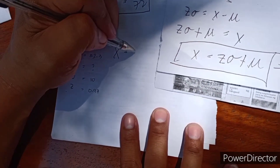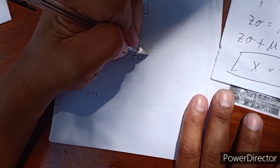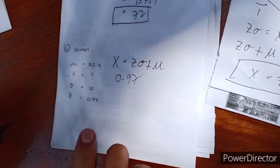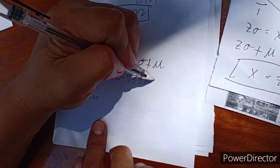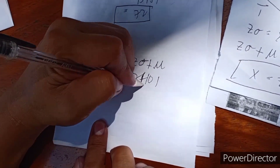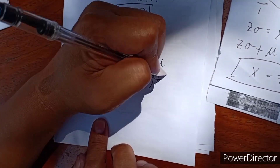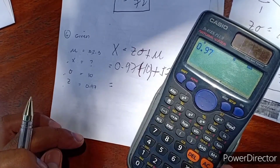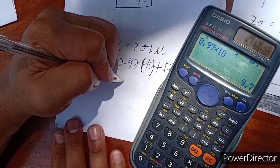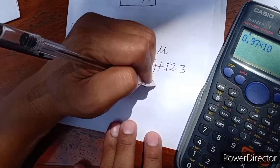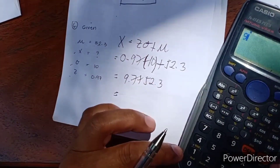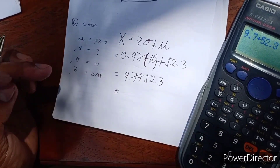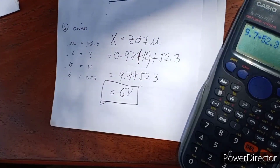Substituting: X equals Z times standard deviation plus mean. Z is 0.97, standard deviation is 10, and mean is 52.3. So X equals 0.97 times 10 plus 52.3. That is 9.7 plus 52.3, which equals 62. Our X is equal to 62.